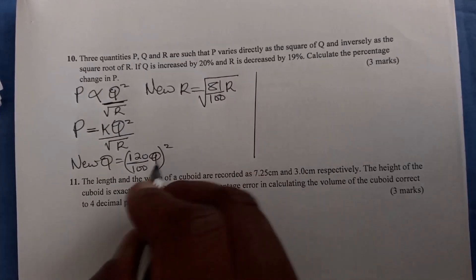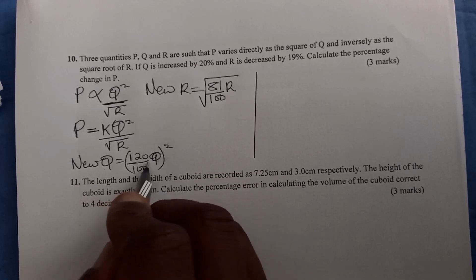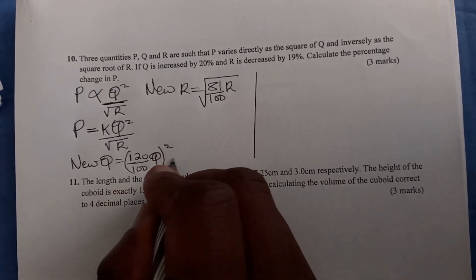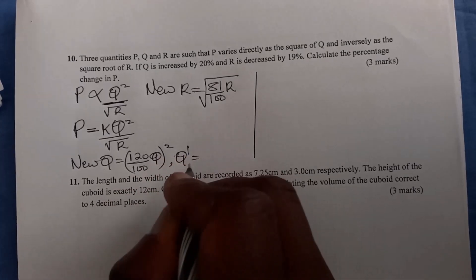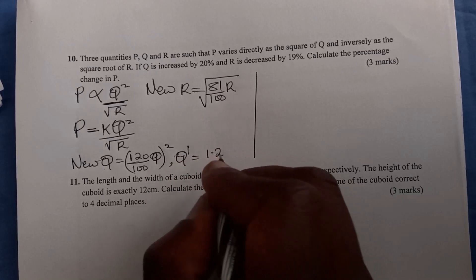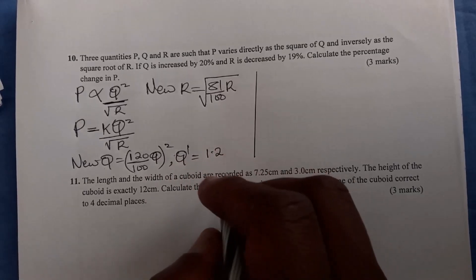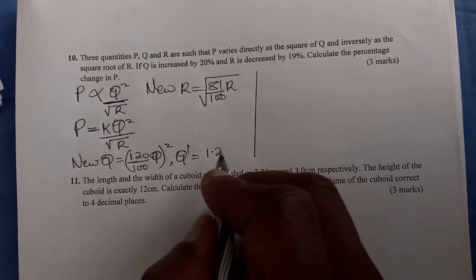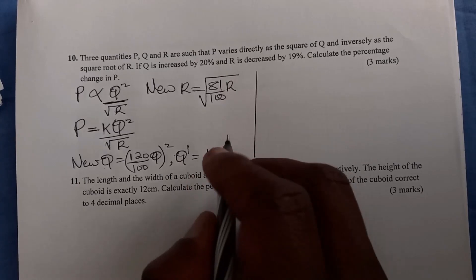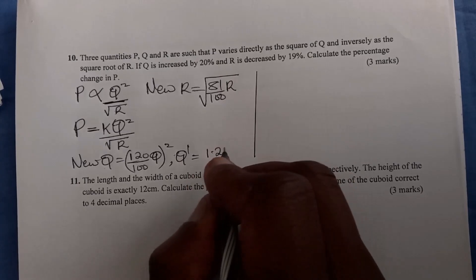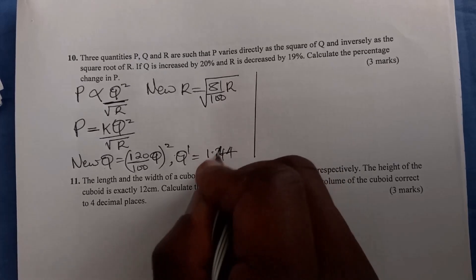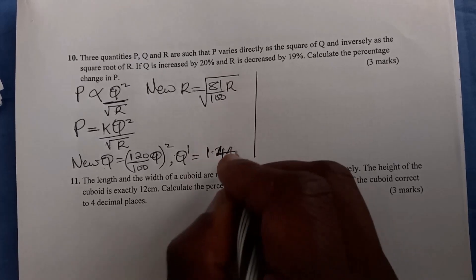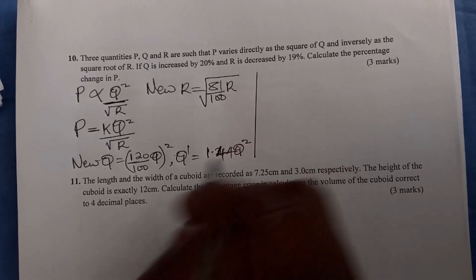Let us work out this new Q. This is 120 divided by 100, so new Q over original Q will be 1.2 squared. Let me multiply this: 1.2 squared is 1.44, times Q squared.